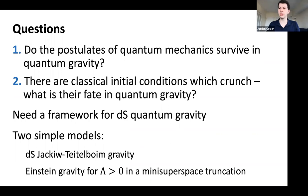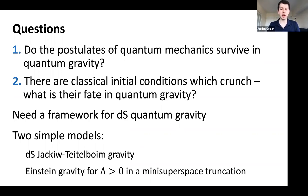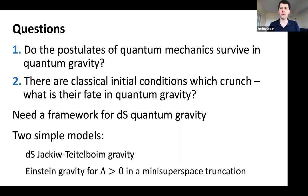To address these questions, we need a framework for de Sitter quantum gravity — a concrete computational framework for computing amplitudes non-perturbatively. Two simple models will allow us to realize these puzzles: first, de Sitter JT (Jackiw-Teitelboim) gravity, which will be the main model; and second, Einstein gravity with a positive cosmological constant in a mini superspace truncation, regarded as a toy version of pure Einstein gravity. Certain features of the analysis in JT gravity may uplift to pure Einstein gravity without the mini superspace approximation.